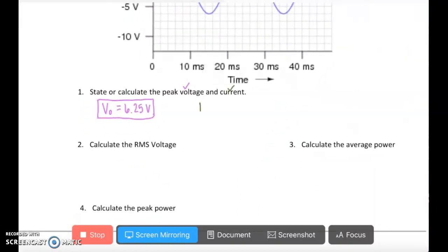Just a reminder that the RMS current is equal to the peak current divided by the square root of 2. So rearranging that, we can find our peak current is the square root of 2 times the RMS current.